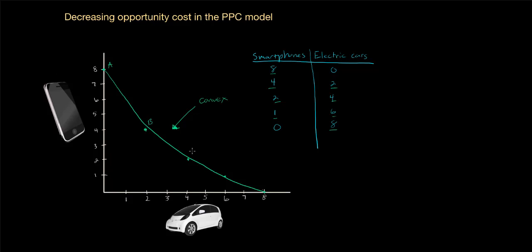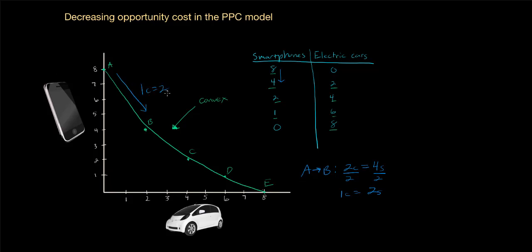Let's calculate the opportunity cost between a couple of these points. We'll call them point A, point B, point C, point D, and point E. As this country moves from point A to B, what's the opportunity cost of electric cars? The country gained two electric cars at the cost of four smartphones given up, so four smartphones. The price of each car: one car cost two smartphones. So the opportunity cost between A and B is one car equals two smartphones.